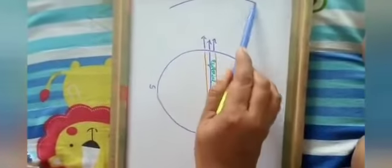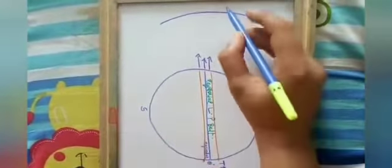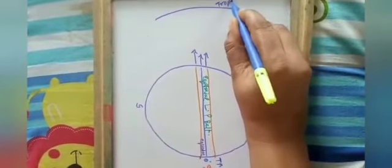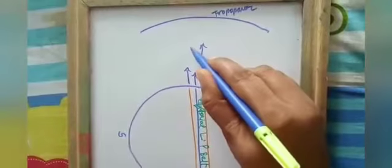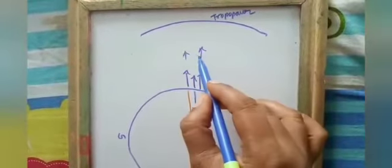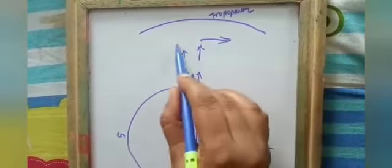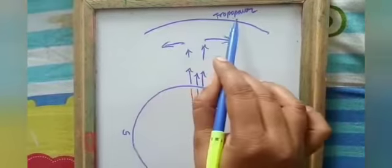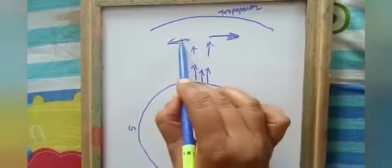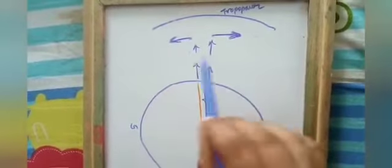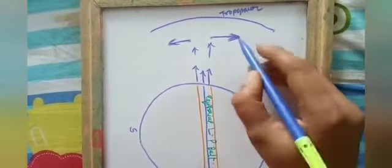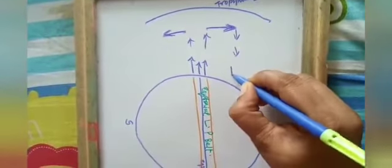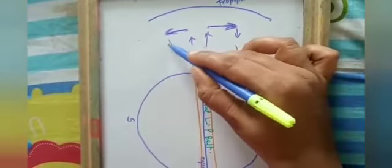The temperature is high so the air is rising up to the tropopause. As it rises, after reaching a certain distance it becomes cool — it is obstructed by the tropopause and moves in opposite directions on both sides. After traveling a certain distance it cools down, and the cool air again starts sinking towards the surface of the Earth.